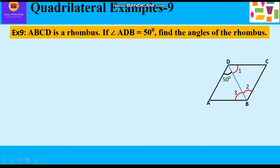ABCD is a rhombus. If angle ADB = 50°, find all the angles of the rhombus. As seen in the figure, ABCD is a rhombus and BD is the diagonal forming angle ADB = 50°. Let us number the remaining angles for clarity, and consider triangle ADB.